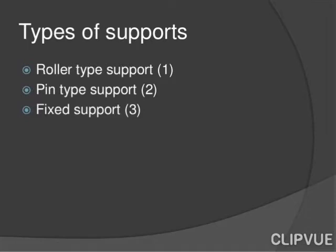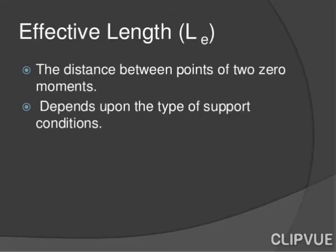Types of supports include: Roller type, Pin type support, and Fixed support. Effective length is the distance between points of two zero moments, and it depends upon the type of support conditions.